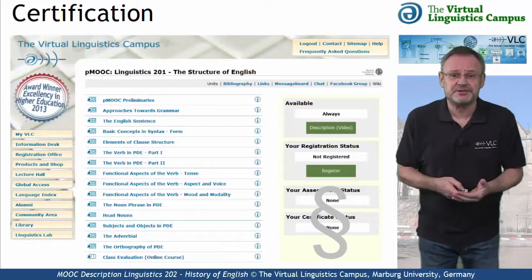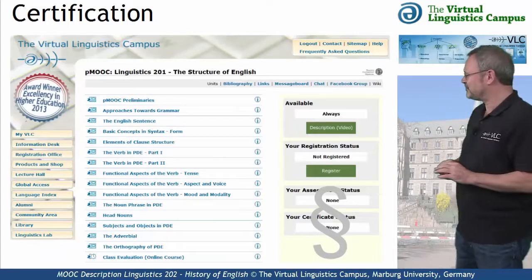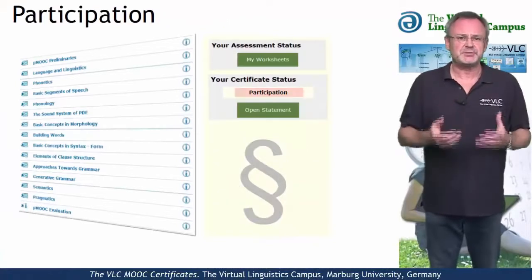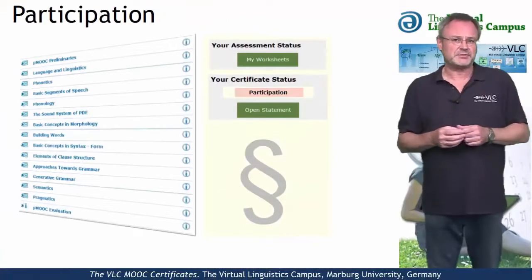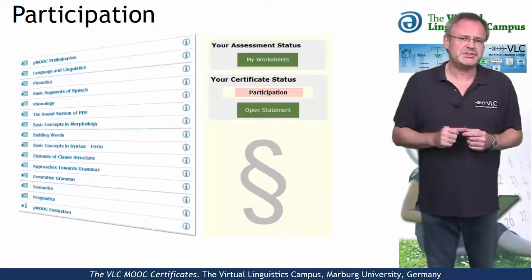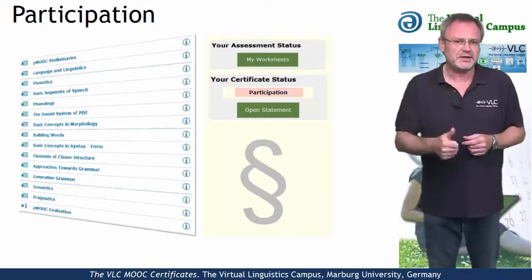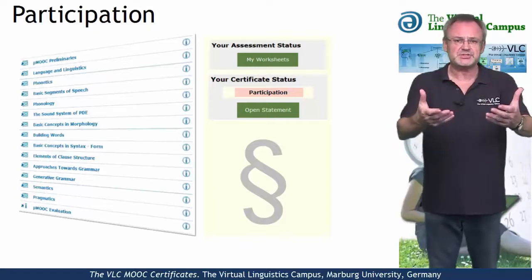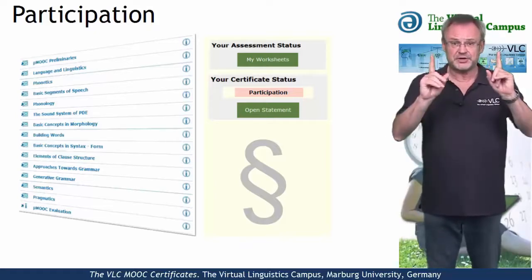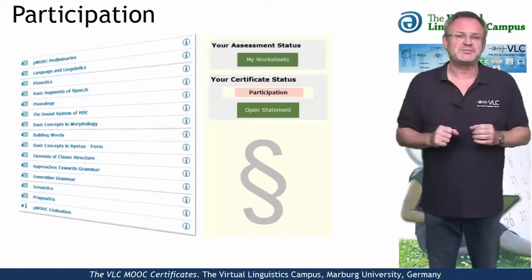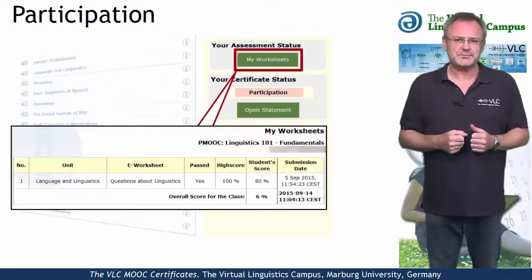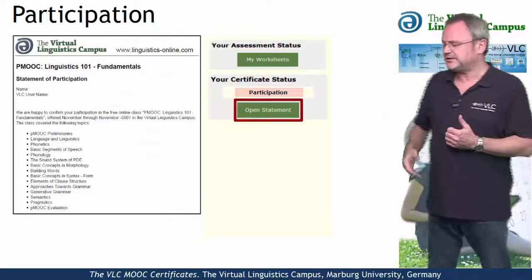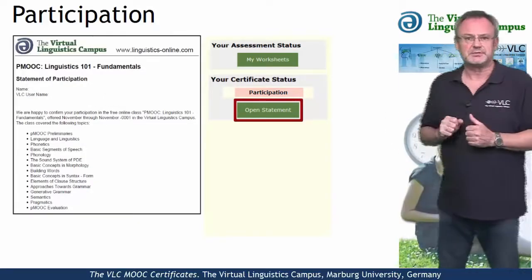If you want a certificate, here are your options. The simplest option is the Statement of Participation issued by the Virtual Linguistics Campus. You will receive such a certificate for regular and active participation, including the submission of at least one worksheet, and it is free. Once you have successfully submitted a worksheet, you will be eligible for such a certificate and can open it by hitting the Open Statement button.